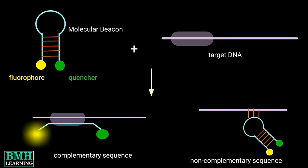Structurally, the molecular beacons contain two complementary ends attached with each other, with a fluorophore at one end and a quencher molecule at another end.